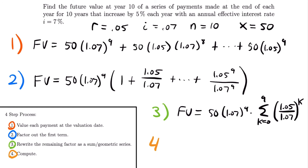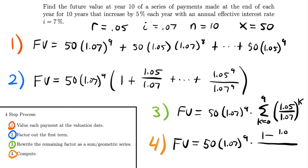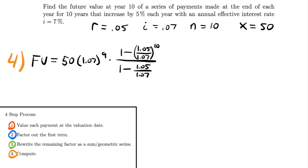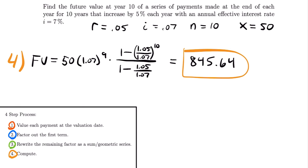Step four: compute the future value using the geometric series formula. FV = 50 × 1.07⁹ × [(1 − (1.05/1.07)^10) / (1 − 1.05/1.07)]. Plugging this into a calculator gives $845.64 — the future value of this geometric annuity starting at $50 with each payment increasing by 5% per year. This four-step process works for all geometric annuities, whether finding present value or future value.